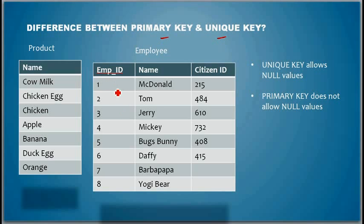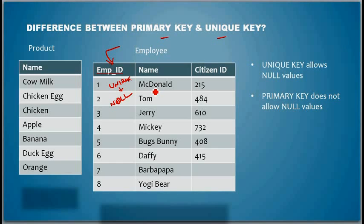The primary key enforces uniqueness and it also makes sure the data doesn't have any null values. So in this table, we can have a primary key on this column because any employee who is hired has to have an employee ID. That is a business rule, and that business rule is enforced by having a primary key on this column. Basically, these keys enforce some business rule.